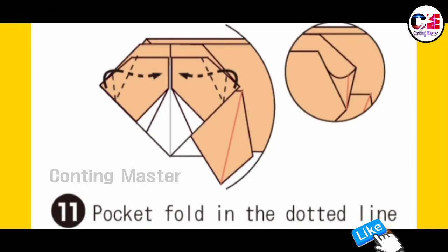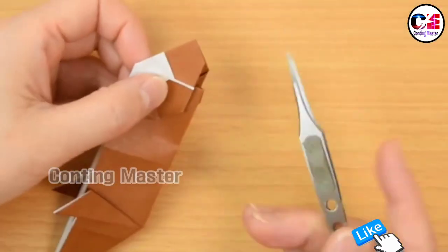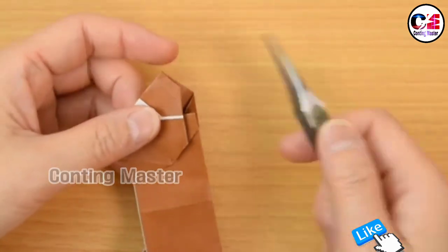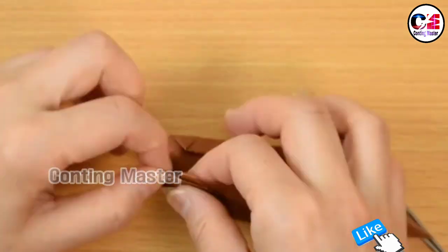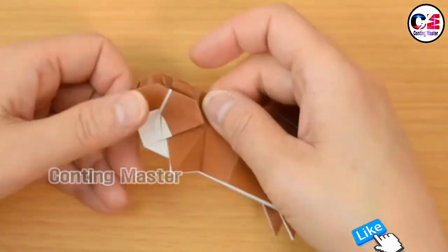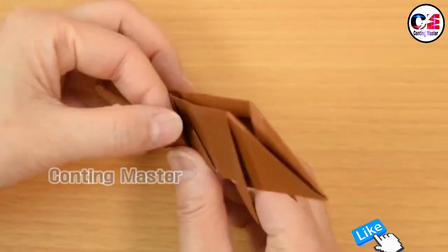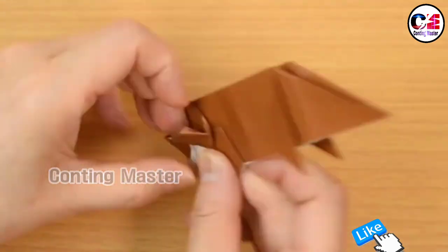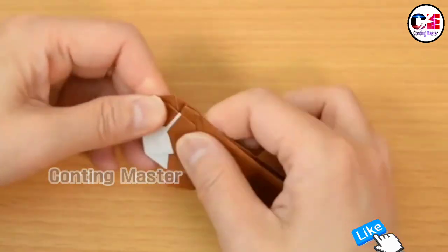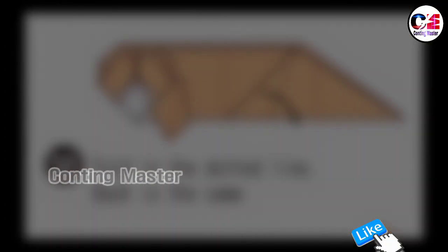Step 11: pocket fold in the dotted line. Step 12: fold in the dotted line, back is the same.